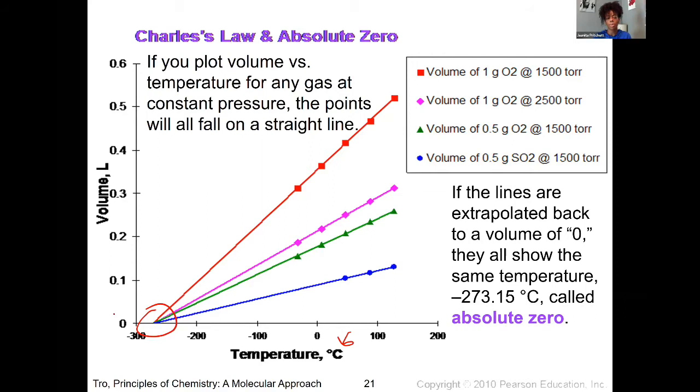If we were to extrapolate back to where these lines would put us, they all converge at this negative 273.15 value. And so that value represents what we know as absolute zero. So we're converting to Kelvin because we want to avoid putting negative numbers into these calculations.